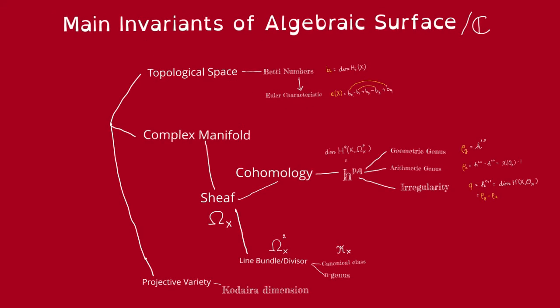So now we'll move on to the last invariant, the Kodaira dimension. For all the previous invariants, we never really used the algebraic part of the algebraic surface.